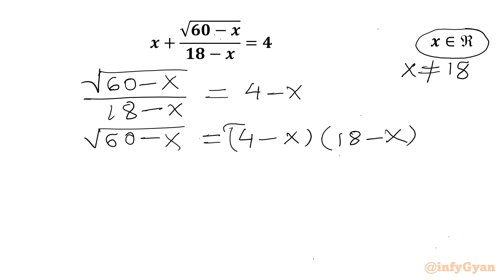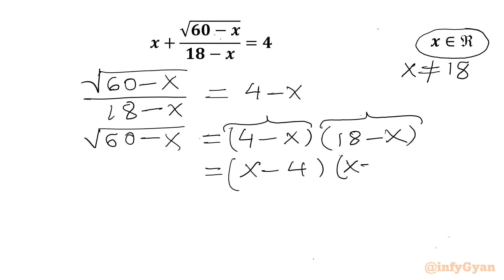Or I can write square root (60 minus x) equal to (4 minus x) times (18 minus x). If I take minus 1 common from each bracket, then minus times minus becomes plus, so it becomes (x minus 4) times (x minus 18). The left-hand side is square root (60 minus x).